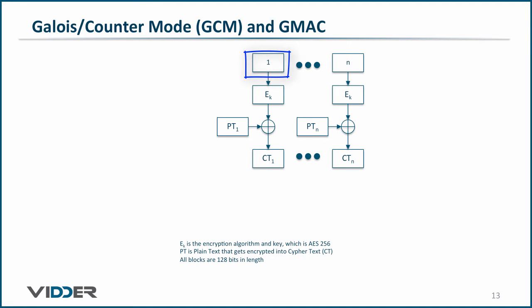However, starting the counter at 1 does not provide enough randomness. Therefore, the counter is concatenated to an initialization vector that acts as a nonce, where a nonce is a number used once. For Galois counter mode,